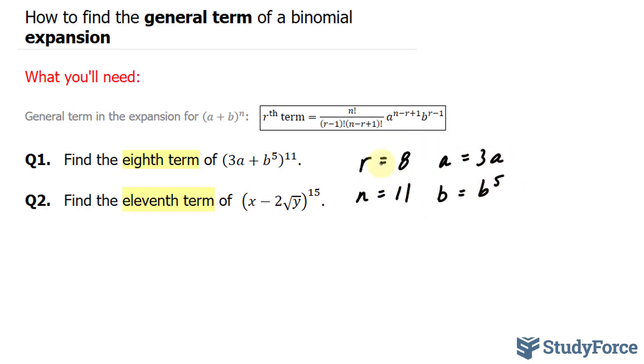Next, we'll substitute all of these into this formula, where we end up with n factorial, which represents 11 over r minus 1, 8 minus 1 factorial, bracket 11 minus 8 plus 1 factorial.